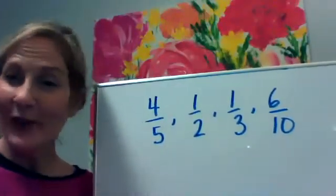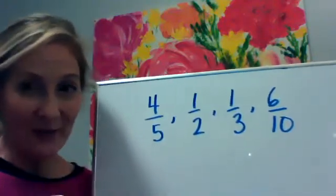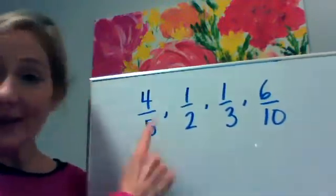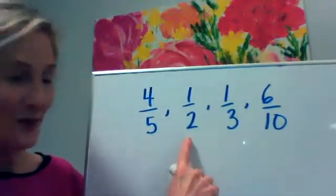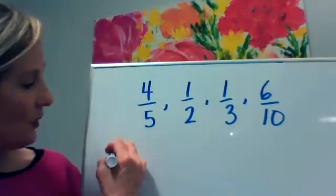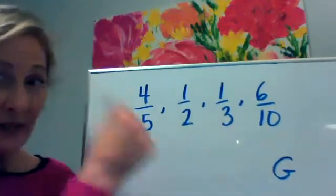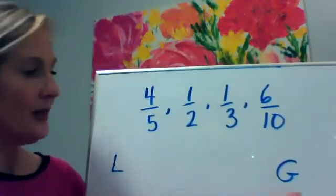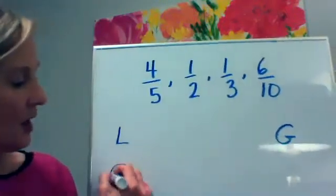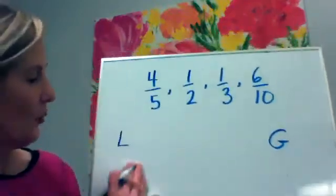Okay everybody, here we go. We have been learning how to compare fractions, and now we're going to use a whole bunch of those strategies to order a list of fractional amounts. Here's a list of four fractions: four fifths, one half, one third, and six tenths. We're going to order those from least to greatest. I like to record that so I don't forget, because sometimes they'll ask us to order from greatest to least.